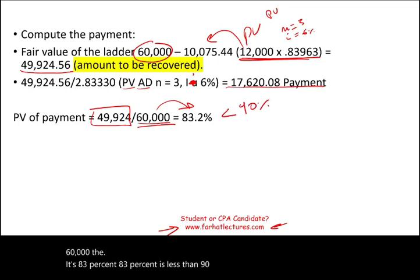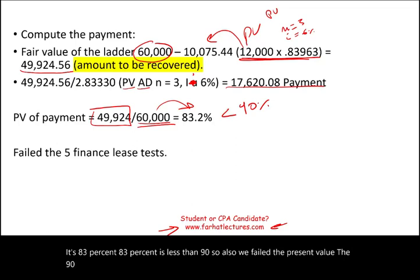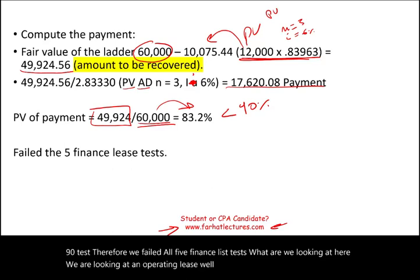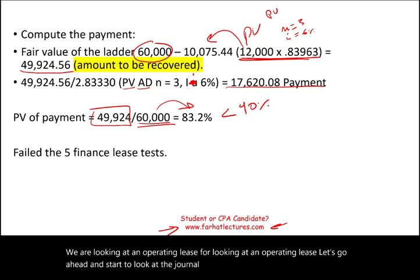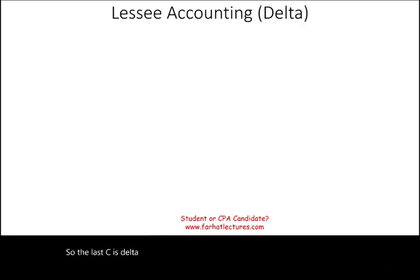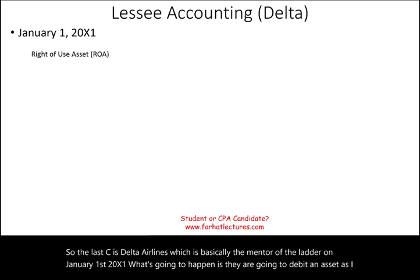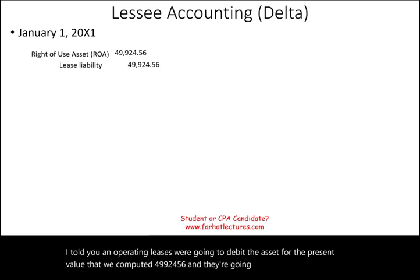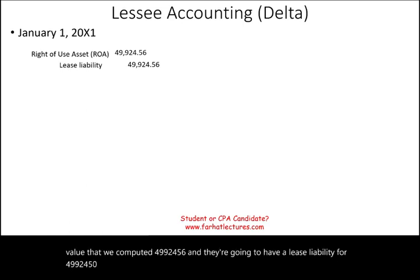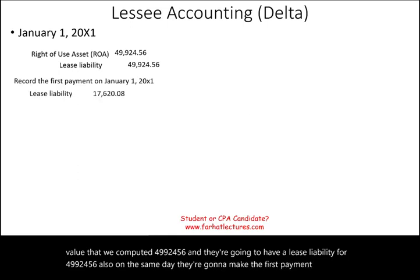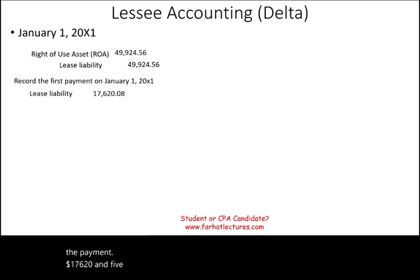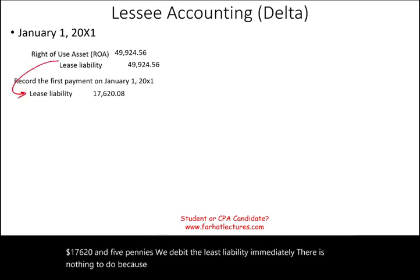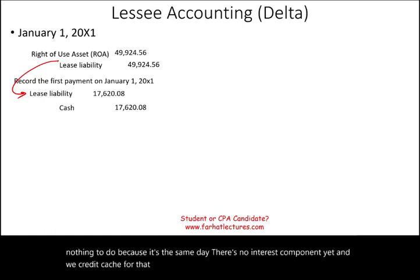We failed the 90% present value test, so we've failed all five finance lease tests — this is an operating lease. For the lessee, Delta Airlines: on January 1, 20X1 debit Right-of-Use Asset $49,924.56 and credit Lease Liability $49,924.56. On the same day, make the first payment: debit Lease Liability $17,620.05 and credit Cash. There's no interest component yet since it's the same day.